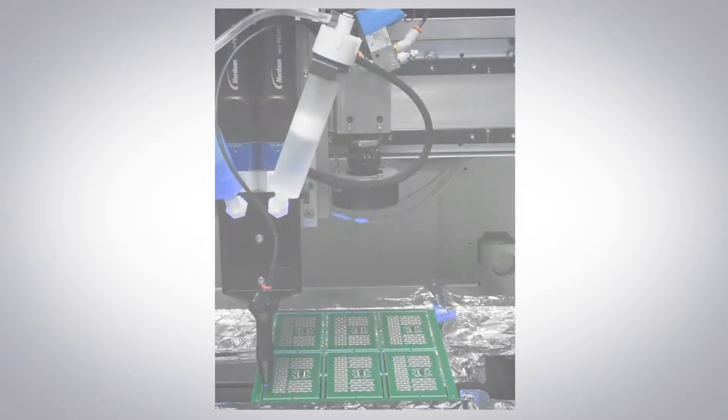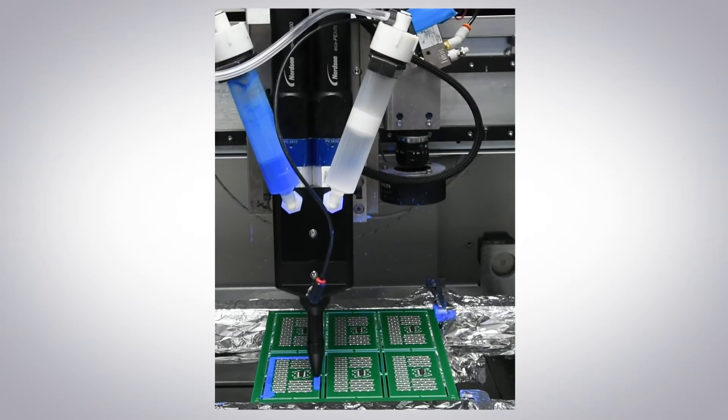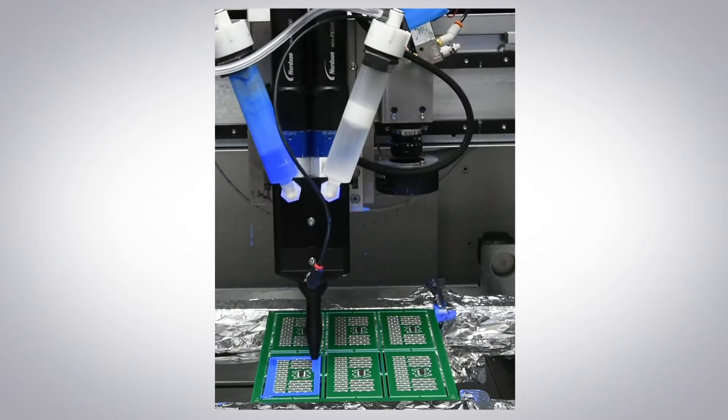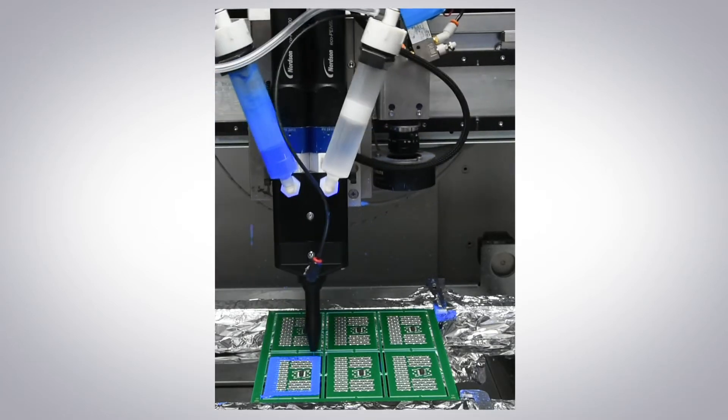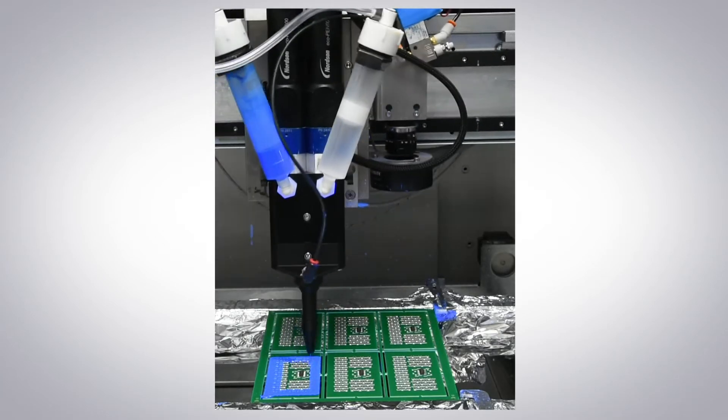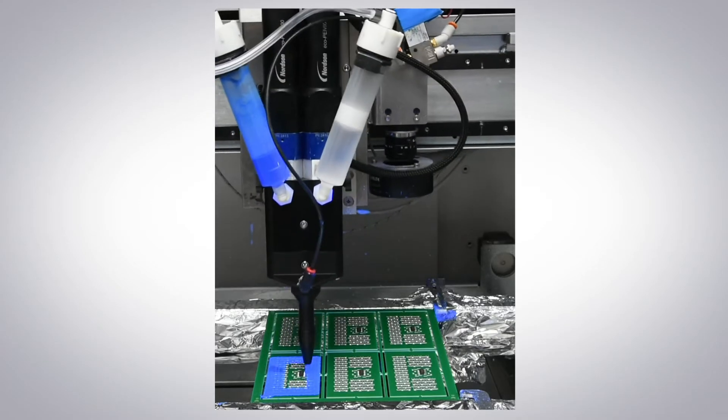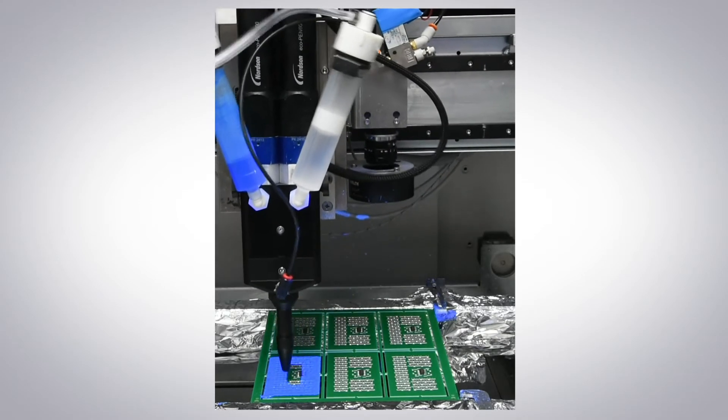Spray pattern setup is essentially identical whether it be a 2K material or a more traditional coating and technicians should have no trouble adjusting to using 2K materials. The only key consideration is the line spacing.